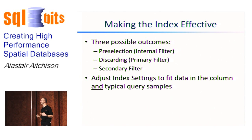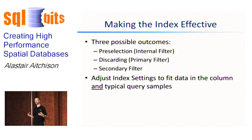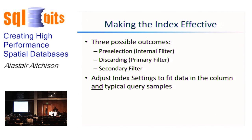What you need to do is choose those index parameters — the bounding box, the grid resolutions at each of the four levels, and the cells per object — to match both the data in your table itself and also the sorts of queries that you execute against that table. We're making a comparison between two sorts of geometries, and those geometries must be tessellated according to the same index. A common problem is people who choose index settings based on the contents of the table alone.